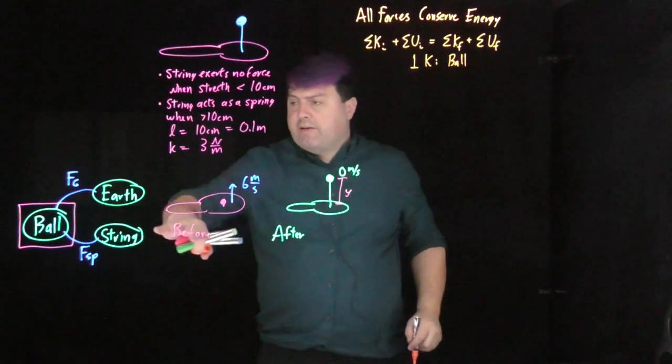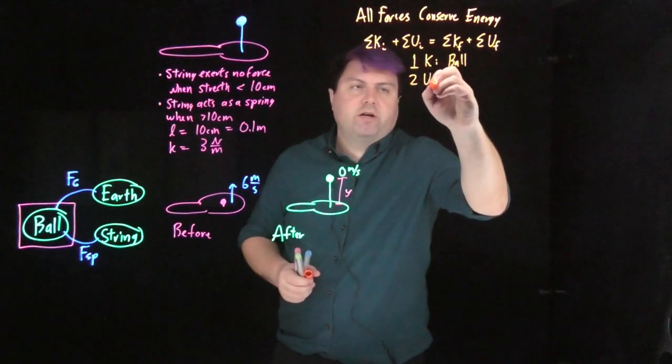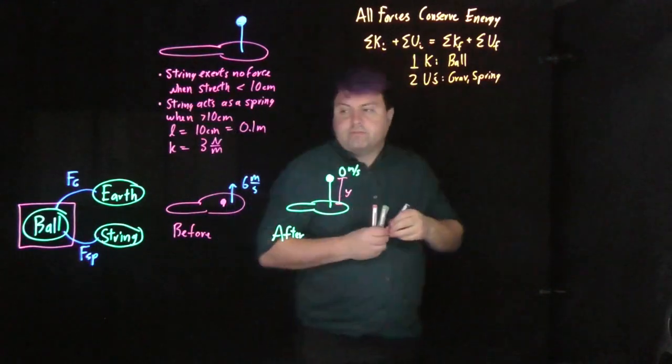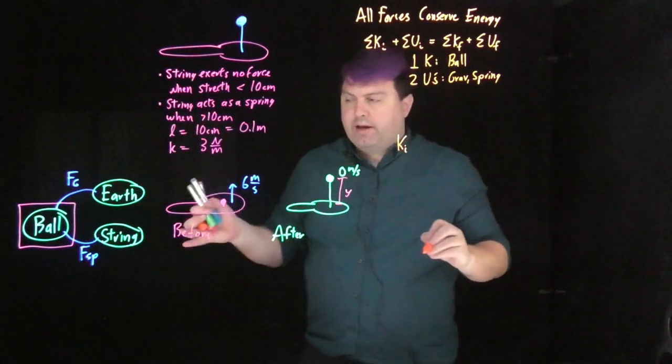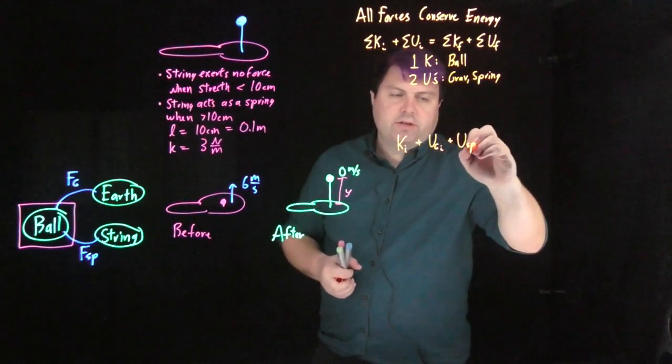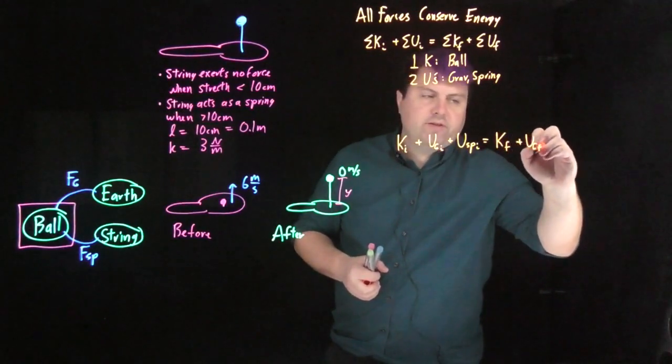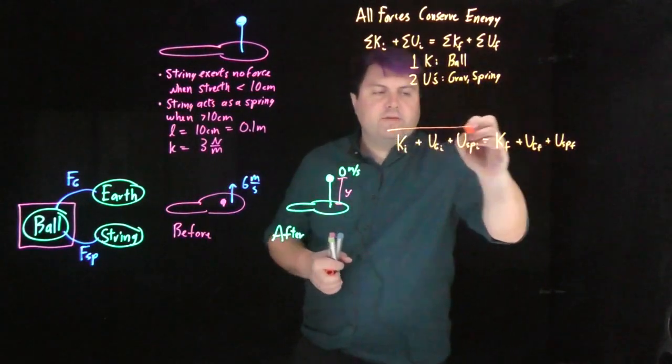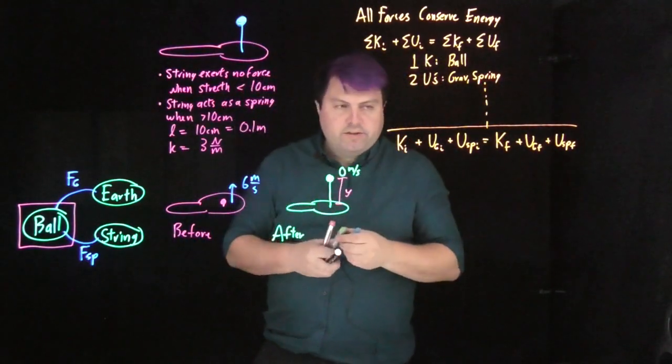How many forces do we have interacting with our system? We have the force of gravity and the spring force. We can write it out as the kinetic energy initial of the ball, plus the potential of gravity initial, plus the potential of spring initial, equals the final kinetic energy, plus the final gravitational potential energy, plus the final spring potential energy.